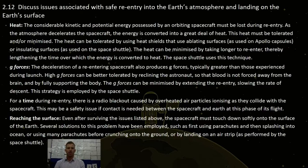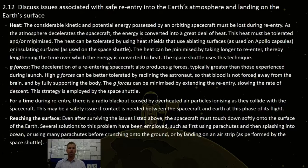Our fourth dot point is reaching the surface. Reaching the surface is an issue because we need to find where and how they're going to land. Even after surviving the issues above, the spacecraft must touch down softly onto the surface of the Earth. Several solutions have been posed: first, using parachutes and then splashing into the ocean; using parachutes before landing on the ground; or landing on an airstrip, as performed by the space shuttle previously.